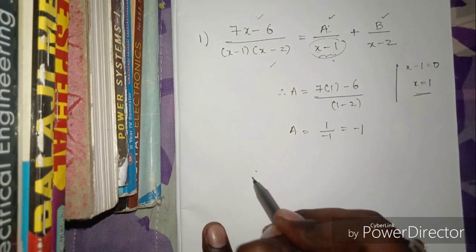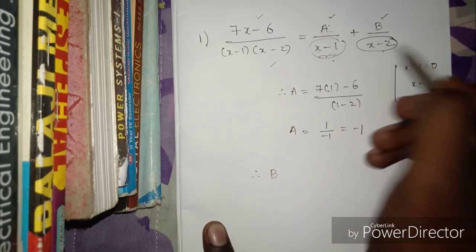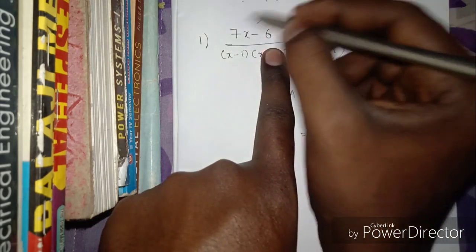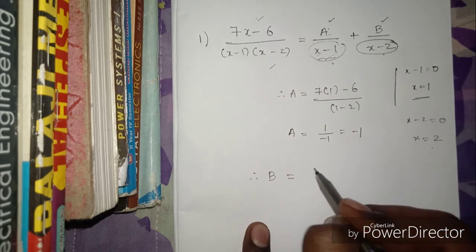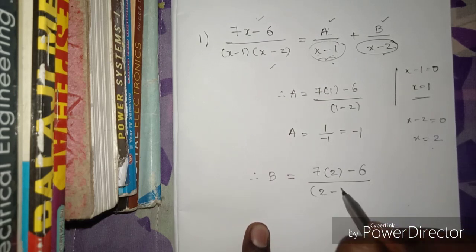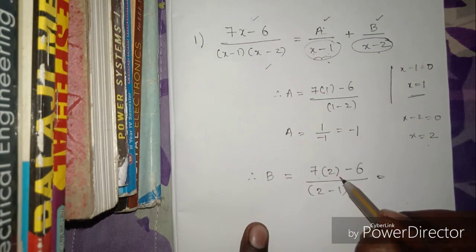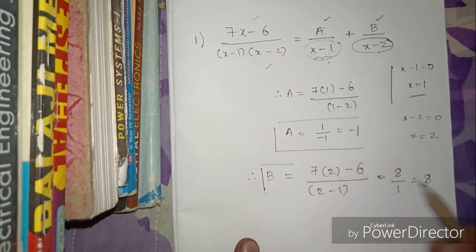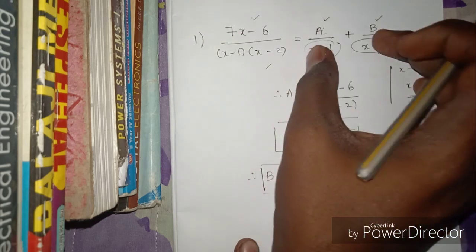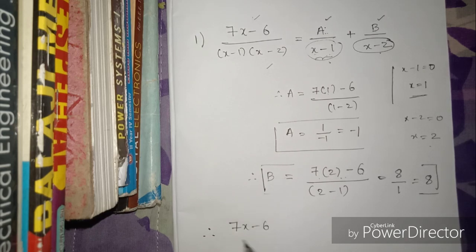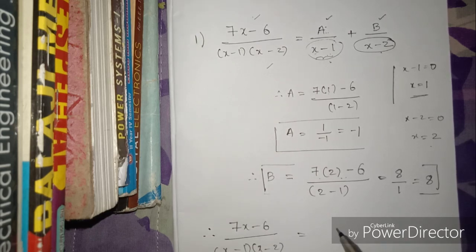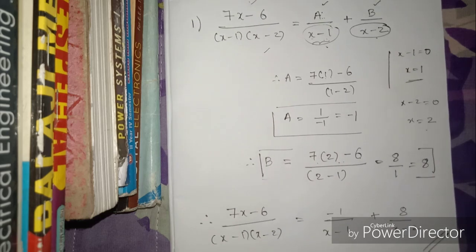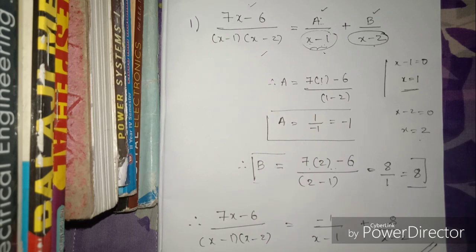Now we find B. Set x - 2 = 0, so x = 2. Close the (x - 2) term and substitute x = 2 into the left-hand side fraction: B = (7×2 - 6) / (2 - 1) = (14 - 6) / 1 = 8. So B = 8. Therefore, the answer is: -1/(x - 1) + 8/(x - 2). Completed — very simple.